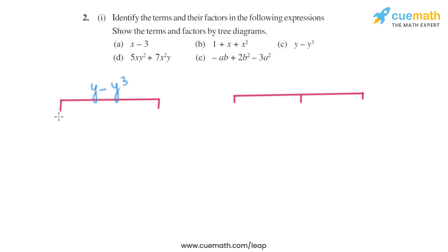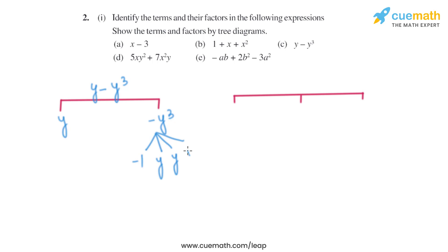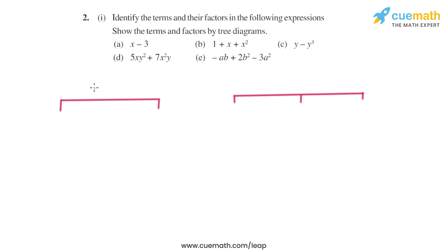Now let's move on to the third part. The expression given is Y minus Y cube. The terms are Y and minus Y cube. The factors of minus Y cube will be minus 1, Y, Y, and Y — as it is Y cube, so there will be three Y's.